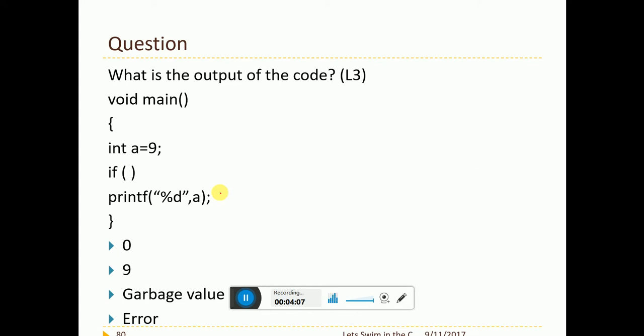Now, if a equal to 9, just if of printf a. Is this right? No. This requires a condition for sure. It has to be if of 0, if of 1, if of something should be there. Otherwise it is wrong.